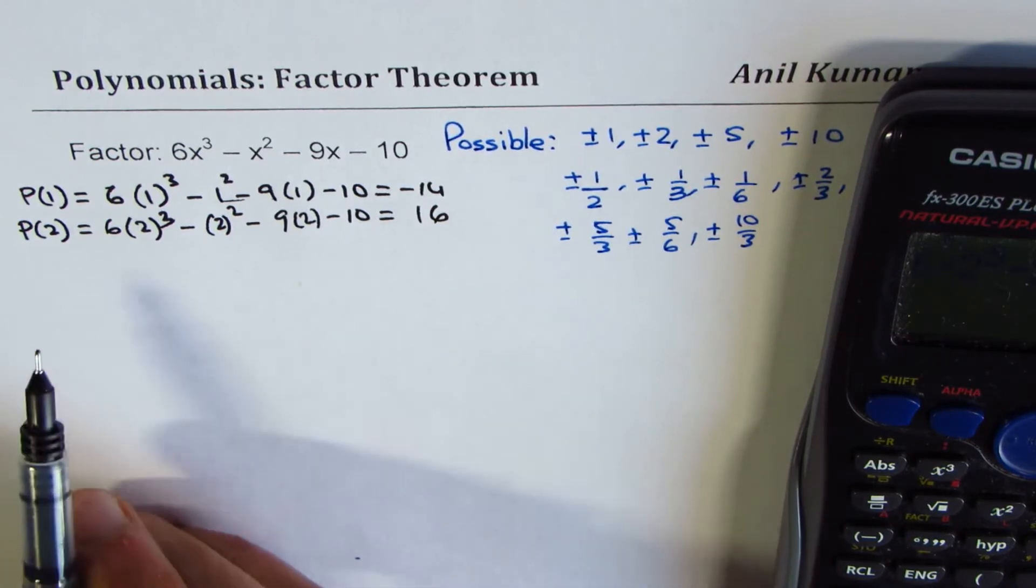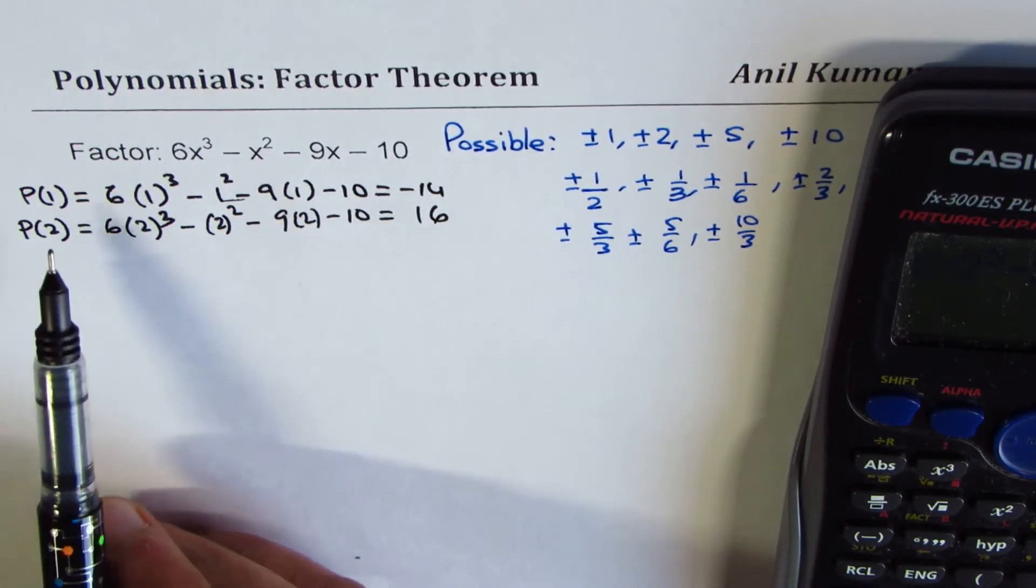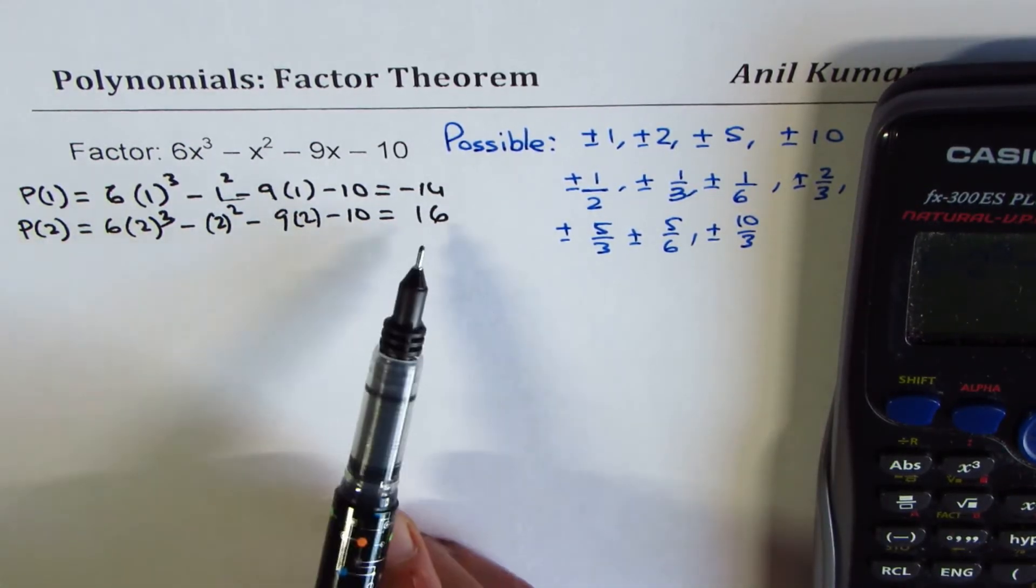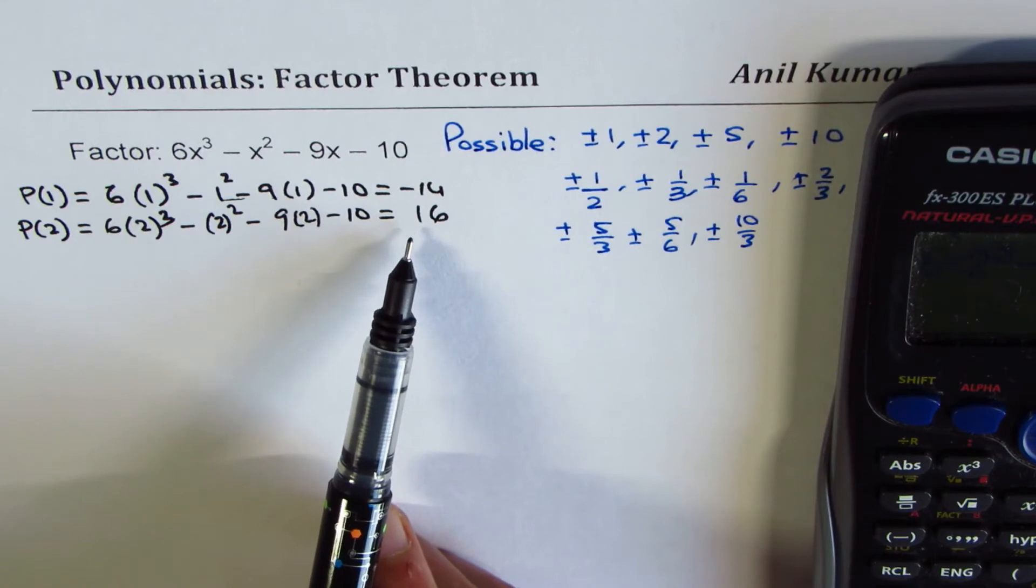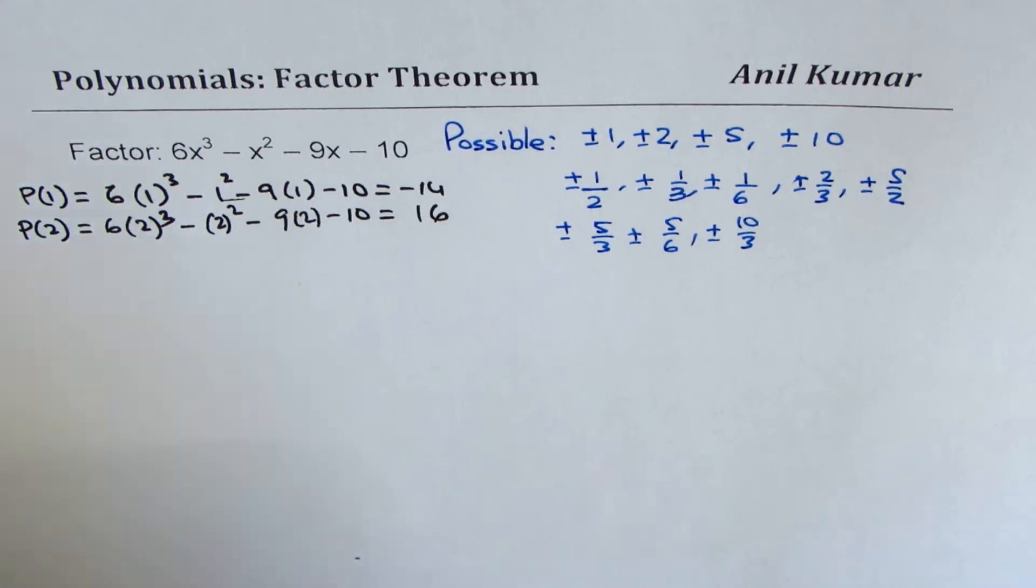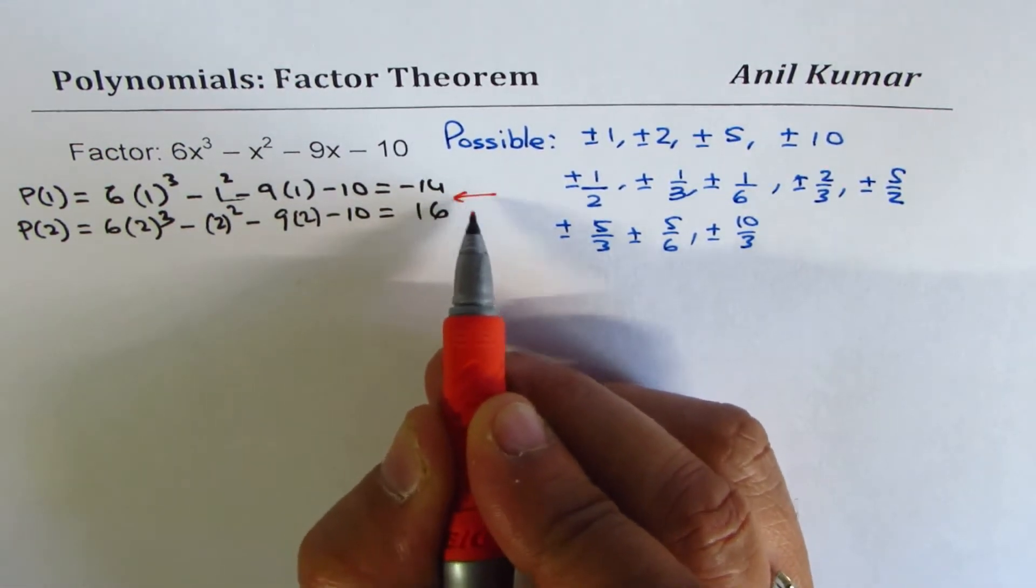Now, that means that between 1 and 2, there should be a 0. We cross from negative to positive. So this is the time when we should check for fractions. We are looking for a value between 1 and 2.